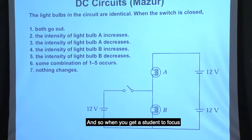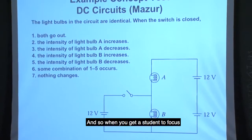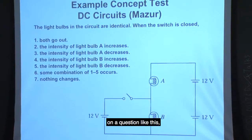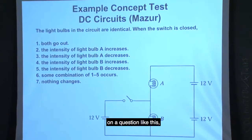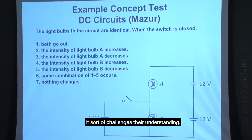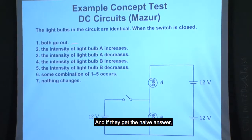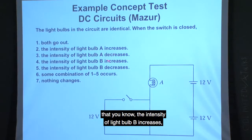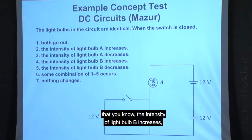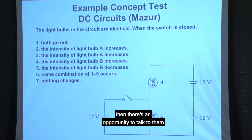When you get a student to focus on a question like this, it challenges their understanding. If they get the naive answer — that the intensity of light bulb B increases — there's an opportunity to talk to them about why that's wrong.